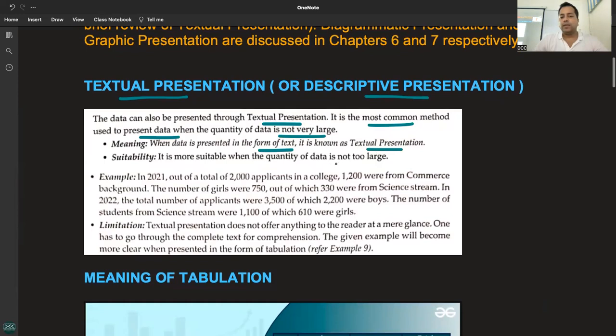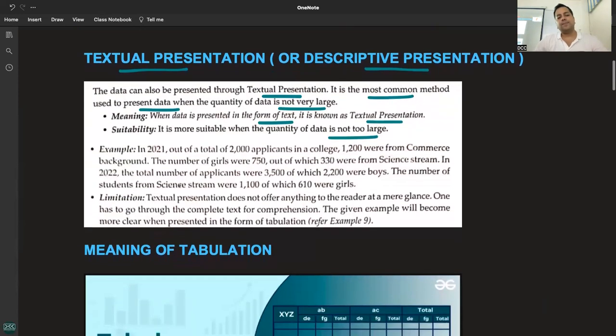Suitability: when the data is not too large. For example, in 2021, out of a total of 2,000 applicants in a college, 1,200 were from Commerce background. For example, out of the total 50 students in 11th and 12th at DCC, 80% scored above 90%. If I give such data in paragraph form, this is textual presentation.